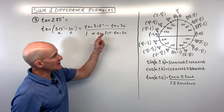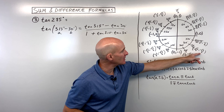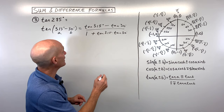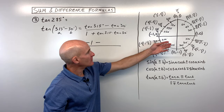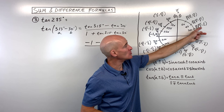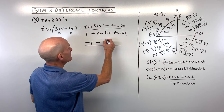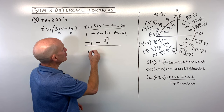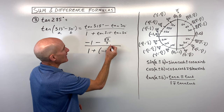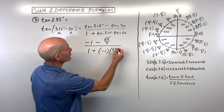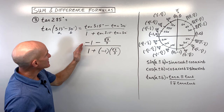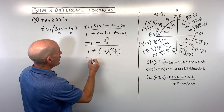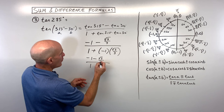Tangent is y divided by x on the unit circle. At 315°, that's (−√2/2) / (√2/2) = −1. The tangent of 30 is (1/2) / (√3/2), which simplifies to √3/3. In the denominator, we have the same values: tangent(315) = −1 and tangent(30) = √3/3. So we have: (−1 − √3/3) / (1 + (−1)(√3/3)), which simplifies to (−1 − √3/3) / (1 − √3/3).